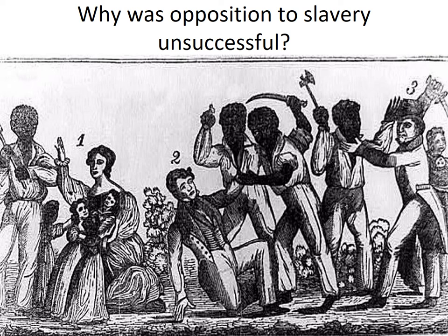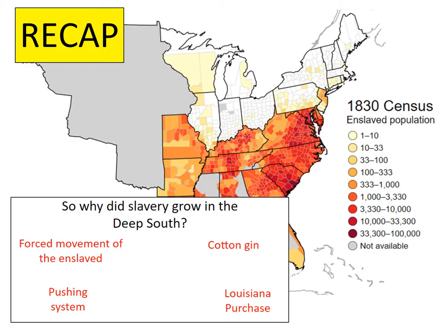In this video, I'd like to look at why opposition to slavery was unsuccessful. As a quick recap from the last video, you will remember hearing that slavery grew massively in the Deep South, and it grew massively for four reasons.